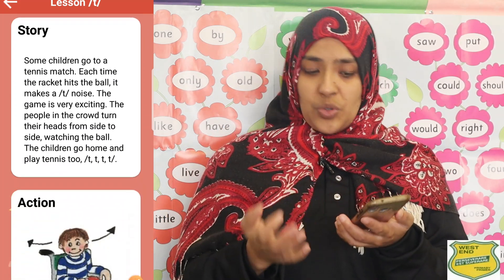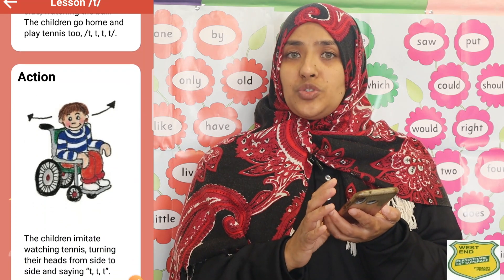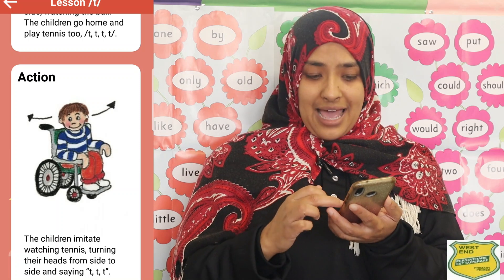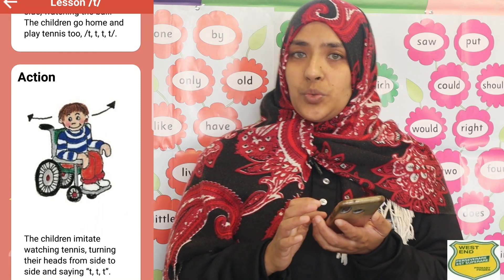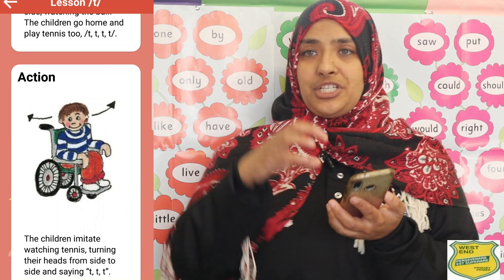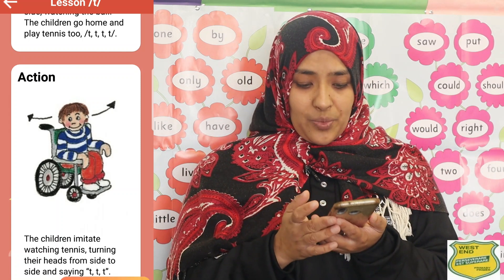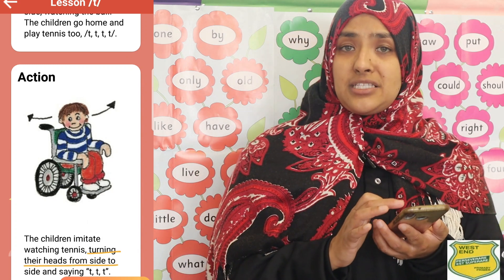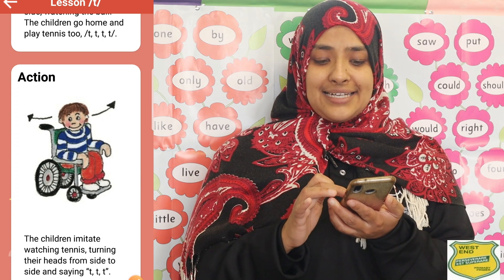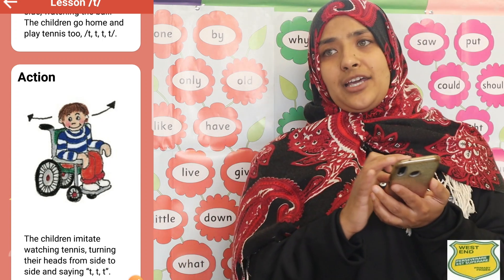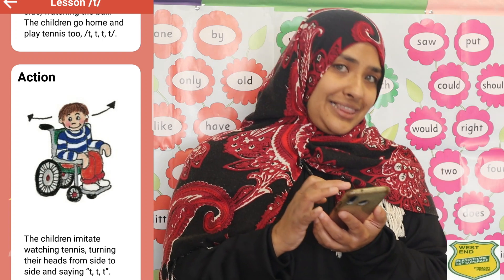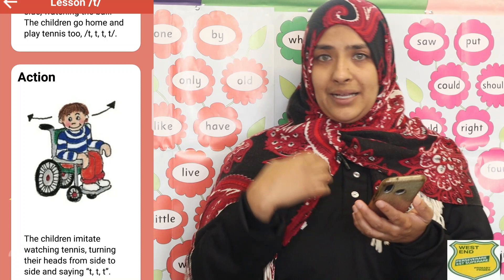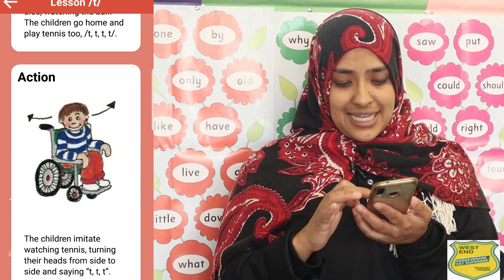After the story we move on to the second step: the action. Each sound has its own action. For the letter T, the children imitate watching tennis — turning their heads from side to side and saying T, T, T. You do the action with them, turning your head and letting them turn theirs. In the same way you are also doing some neck muscle exercises for them.